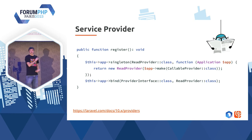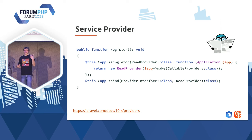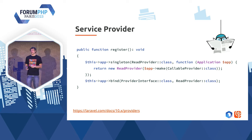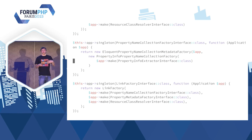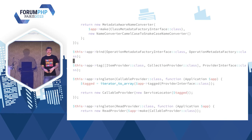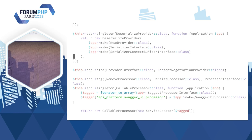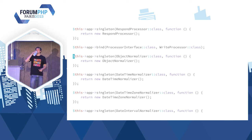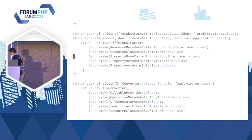Un service provider dans Laravel, ça ressemble à ça. Vous avez une fonction `register` qui est appelée au démarrage de votre application. On va utiliser trois méthodes : `singleton` — on va donner la classe et un callback dans lequel on met l'instance qu'on veut déclarer. Pour récupérer une dépendance, on va utiliser `make` — `app()`, c'est le conteneur de service. Et la dernière méthode que j'ai beaucoup utilisée, c'est `bind`, qui va me permettre de dire que pour une interface donnée, on va injecter tel singleton — par exemple si vous le mettez dans un constructeur.